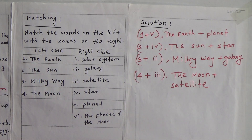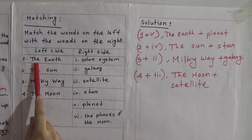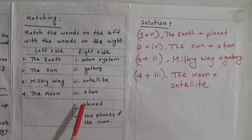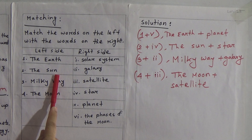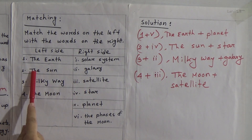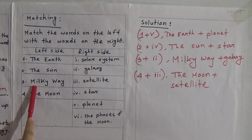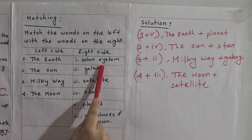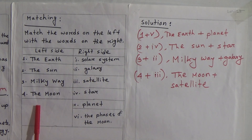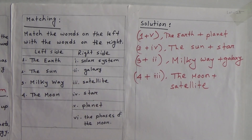To summarize the matching: the Earth is a planet, so number one is matched with number five. The Sun is a star, so number two is matched with number four. The Milky Way is a galaxy, so number three is matched with number two. And the Moon is a satellite, so number four is matched with number three.